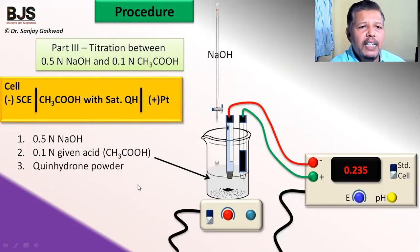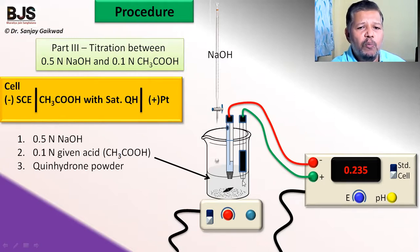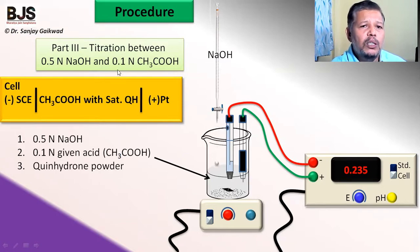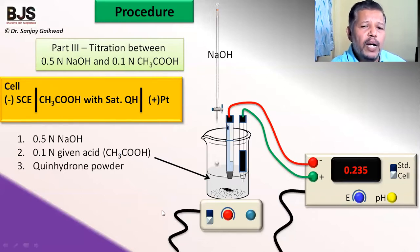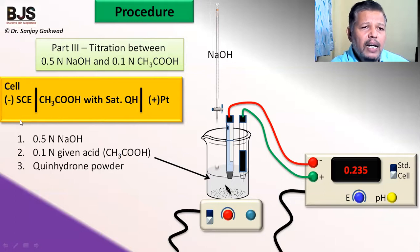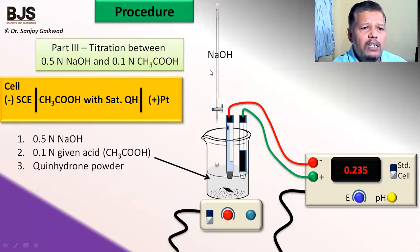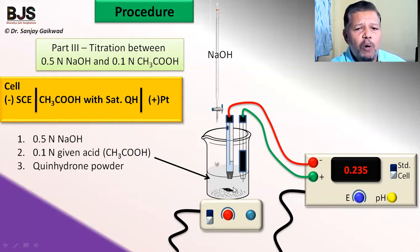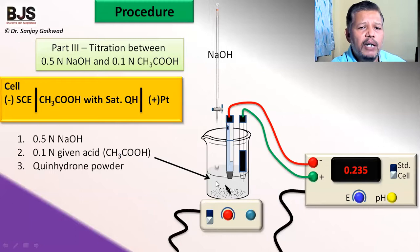The third part is the actual titration between 0.5 normal NaOH and 0.1 normal acetic acid solution (a monobasic weak acid). The NaOH concentration is 5 times larger than that of the acetic acid. Add 0.1 normal acetic acid to the beaker, add quinhydrone powder, and stir to make a saturated solution. The platinum electrode is dipped into this saturated quinhydrone solution, forming the quinhydrone electrode connected to the positive terminal of the potentiometer.